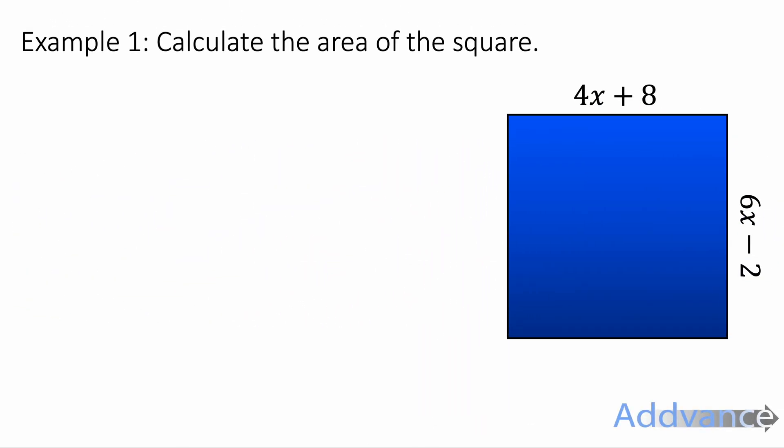Let's start with this example. Calculate the area of the square. It's labelled 4x plus 8 and 6x minus 2. We know that these two lengths must be equal to each other because it is a square and all sides have equal length.